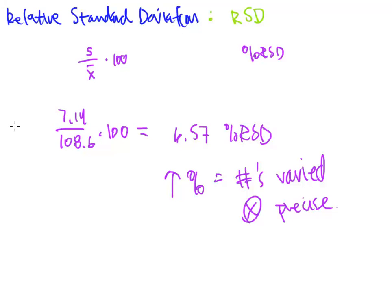So standard deviation, divide it by your average, times it by 100 to get it over to percentage. It really is a percentage because we do that and that's percent RSD.